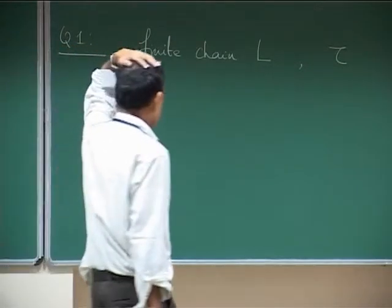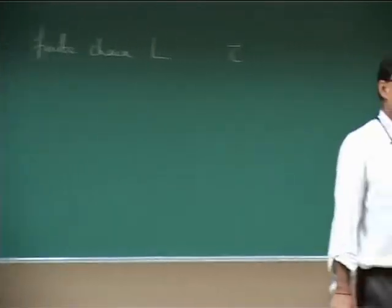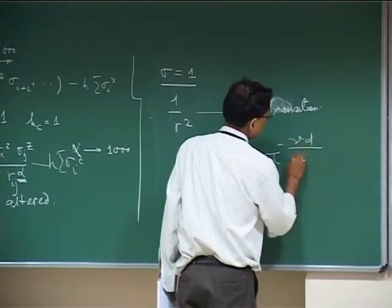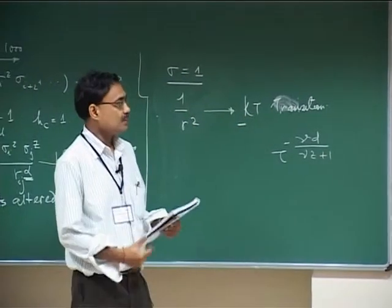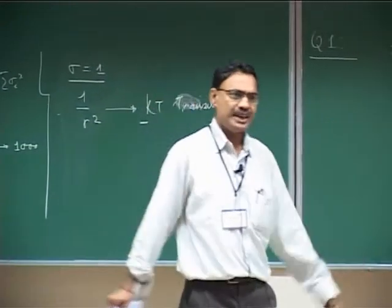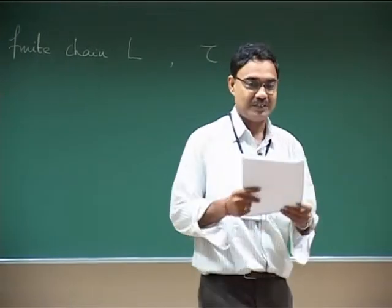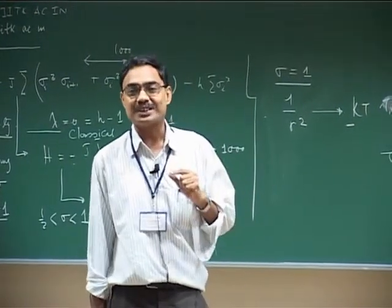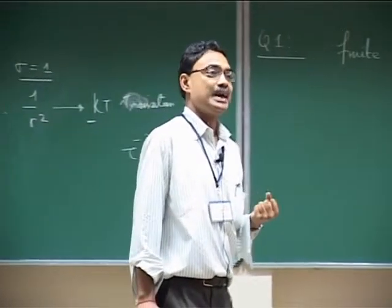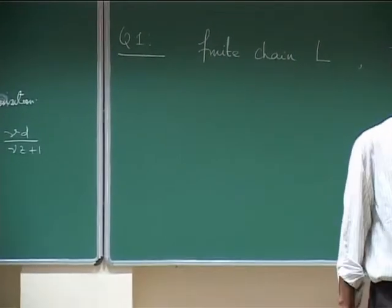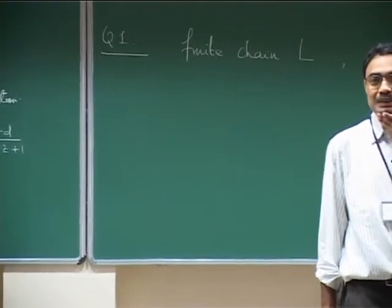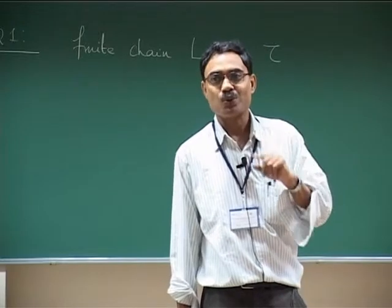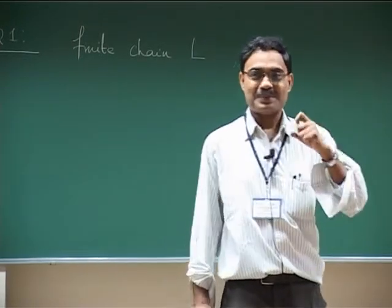I have been talking about the transverse Ising chain in the thermodynamic limit. The Kibble-Zurek scaling was τ^{−νdνz+1}. Now I ask: I have a sufficiently long chain but not thermodynamically large. If you take periodic boundary conditions, the spectrum will always be gapped as long as L is finite — that is why I call it a 'so-called' quantum critical point, because the gap vanishes only in the L → ∞ limit.